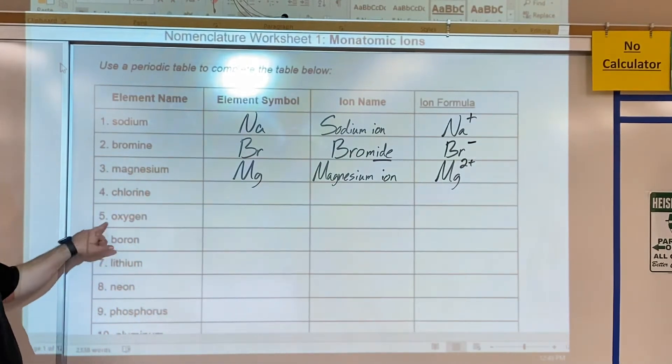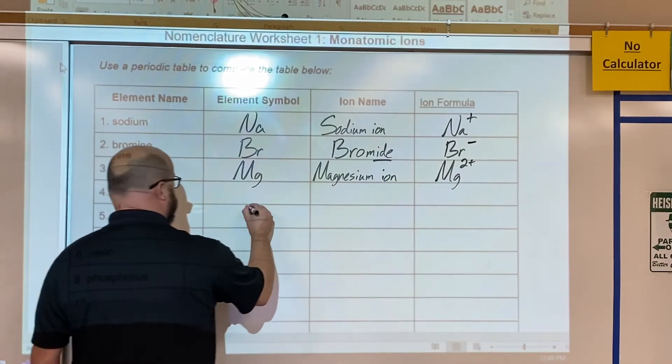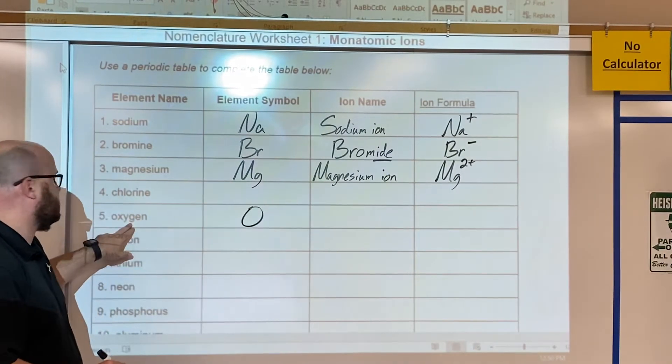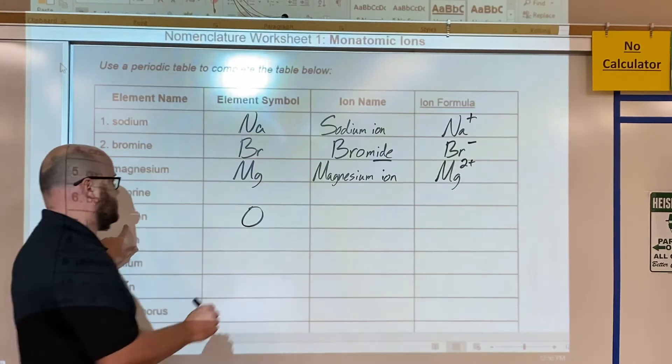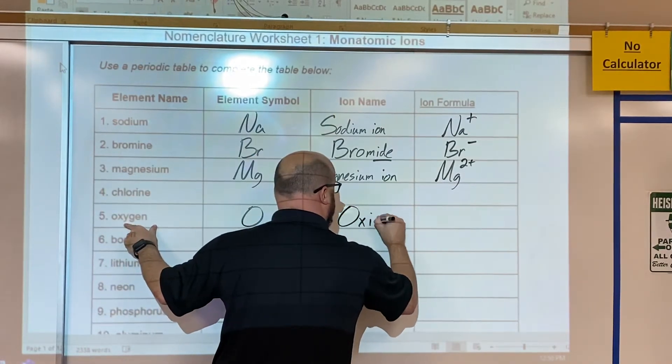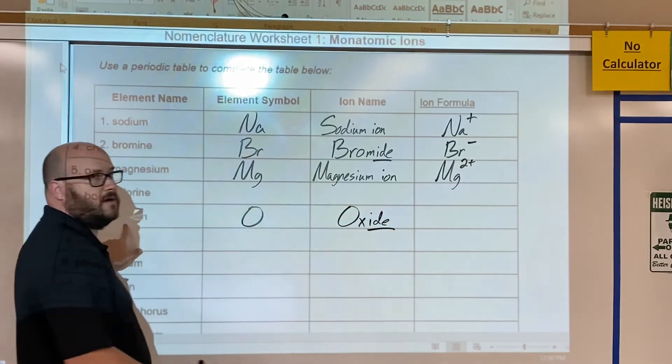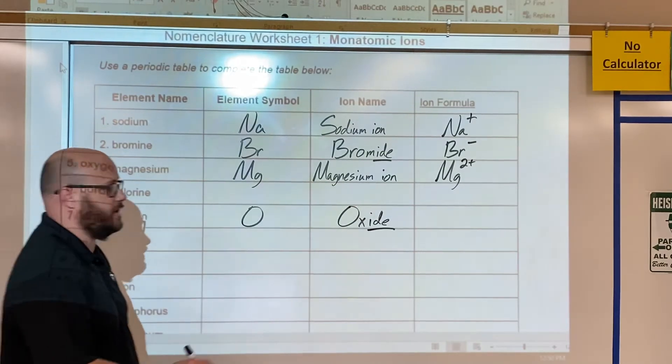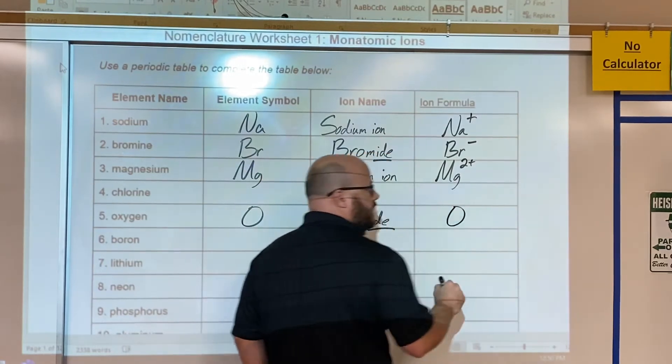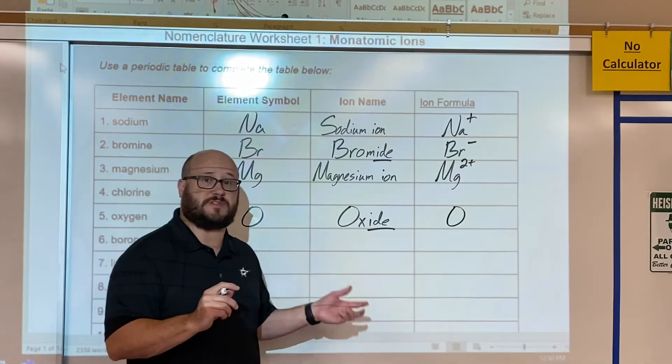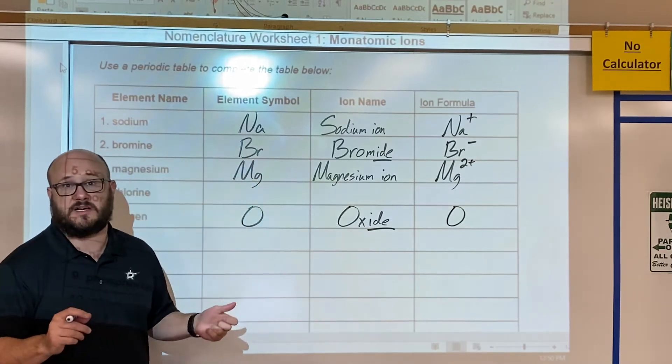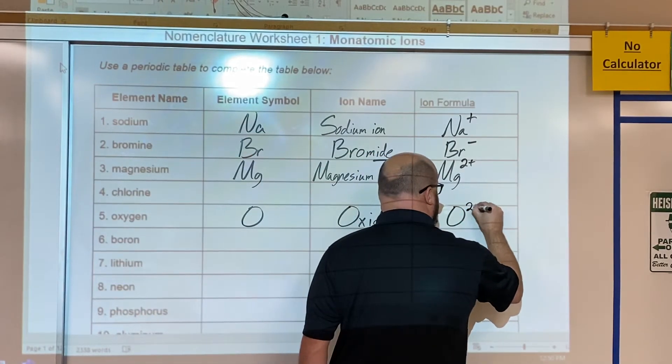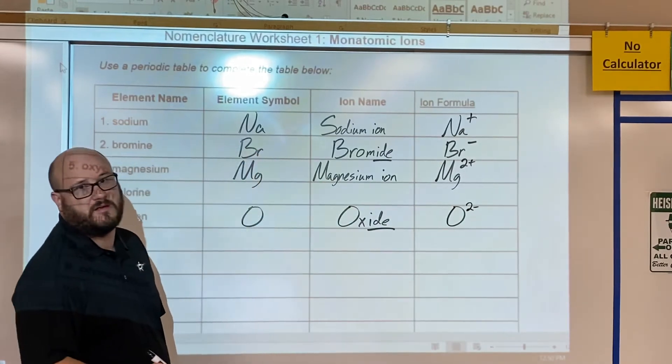Check out oxygen. Oxygen's ion name, a little bit tricky, is oxide. We take off the ygen. For its ion formula, we're going to say O. Oxygen's in group 6A. Group 6A needs to gain two electrons. Once it does, it has a full valence shell and then it's a happy atom. Once it gains two, it's going to be a two negative anion.